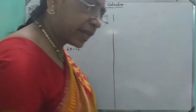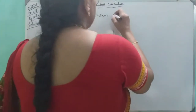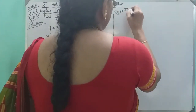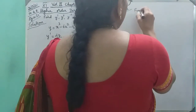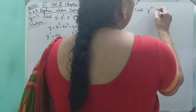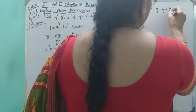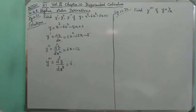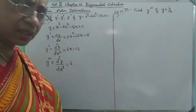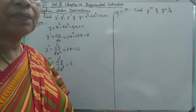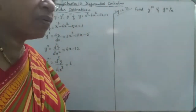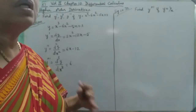Hello students. Example 10.32 — this example is simple. Why do you say y triple dash? If y is equal to 1 by x, how do you differentiate? I am telling you — how do you differentiate? Continuous differentiation — what do you call it? Successive differentiation.